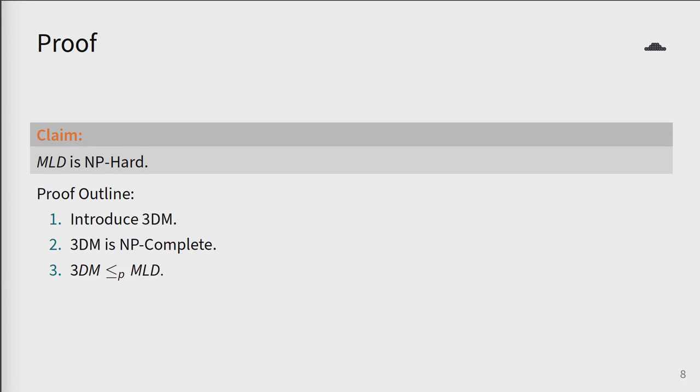Now we need to prove that MLD is NP-hard. In order to do this, we need to show that all problems in NP can be reduced to MLD. But since reduction is transitive, if we can reduce an already NP-complete problem to MLD, then we're done. So the outline of the proof is to introduce a new problem called 3DM, assert that 3DM is NP-complete, and then reduce this problem to MLD.